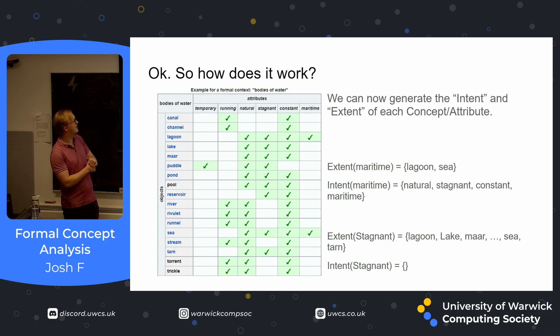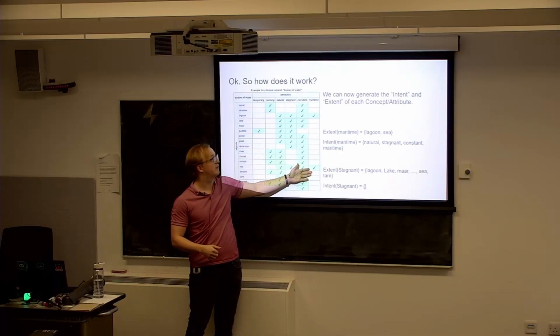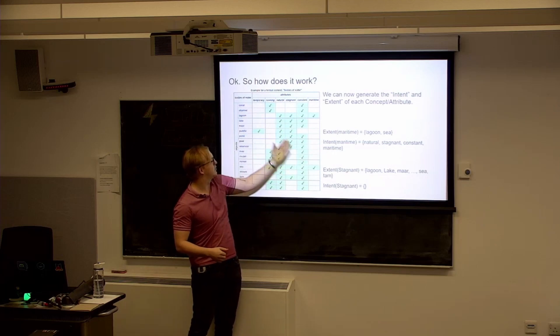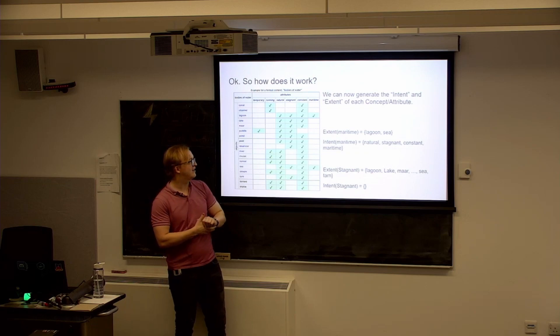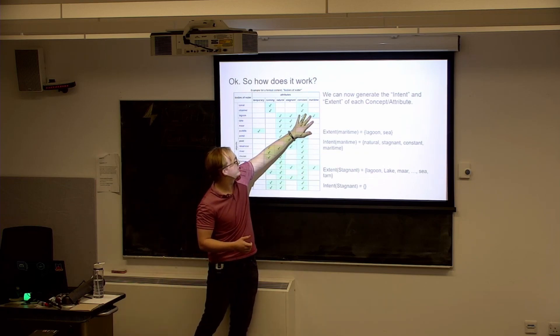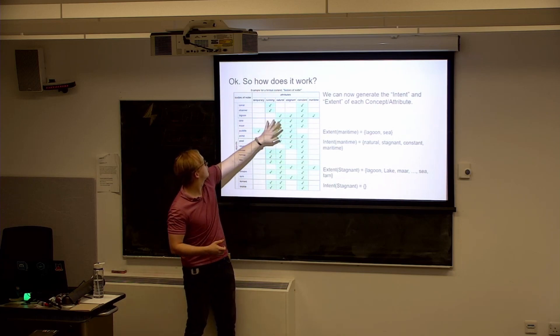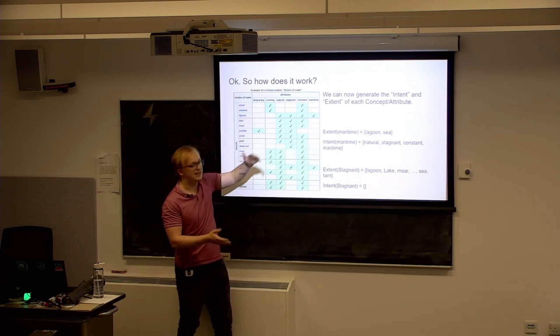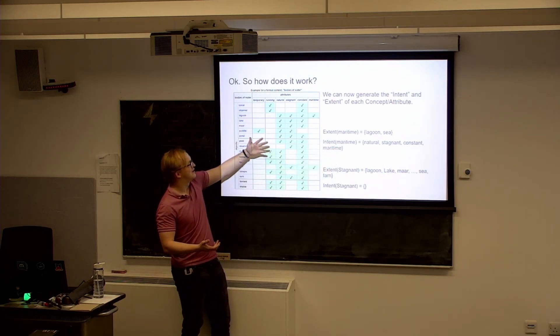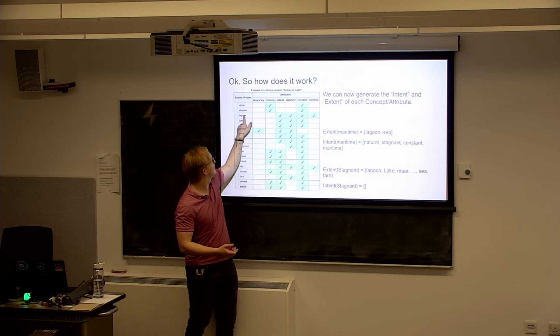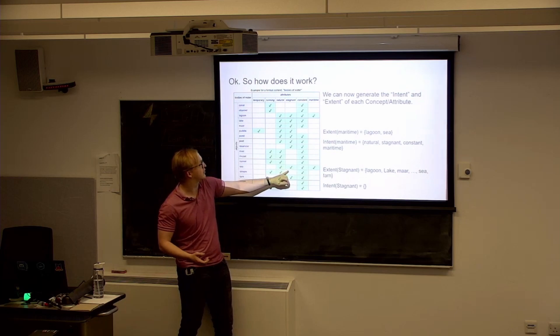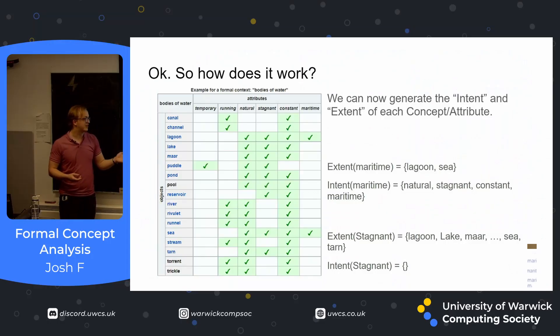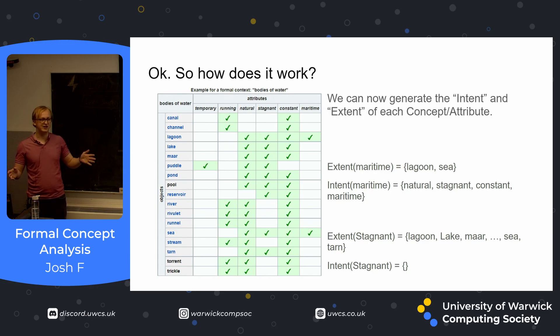Putting it simply, the extent of one of our attributes is essentially whatever's true in this column. So for example, maritime, lagoon and sea. And its intent is a bit more complicated. We take all the objects that are true, we take those objects attributes. So for example, we know lagoon is true for maritime. We'll take all of its attributes: natural, stagnant, constant and maritime and intersect it for everything in its extent. So a lot of words. Essentially we will intersect this row with this row for our case, which is what gives us natural, stagnant, constant and maritime. And you can do the same for all of them. I've gave you another example of stagnant there where its intent is the empty set. Does everyone understand how we get extent and intents for all our attributes?